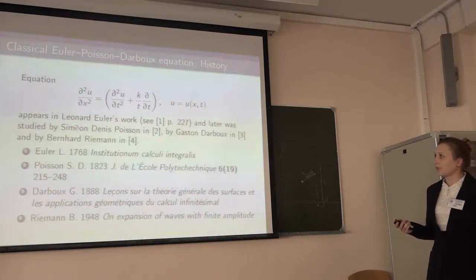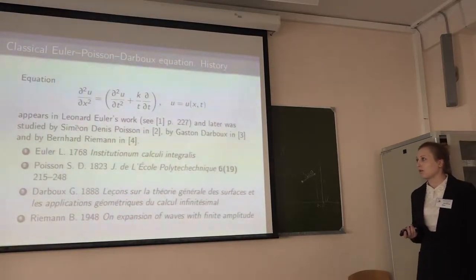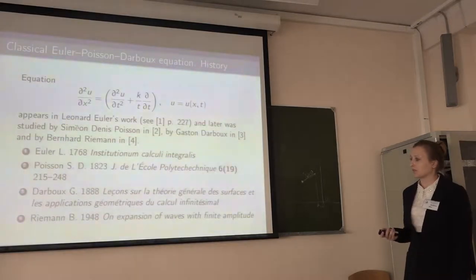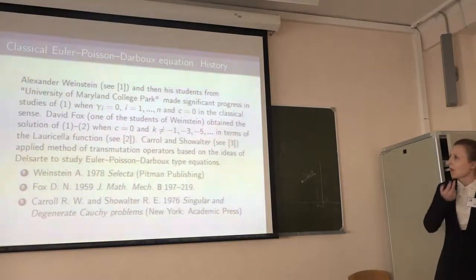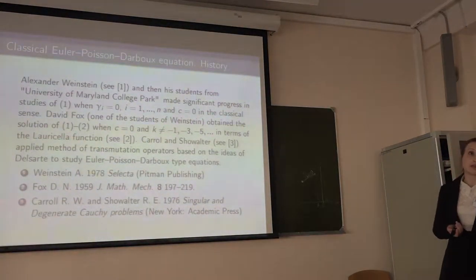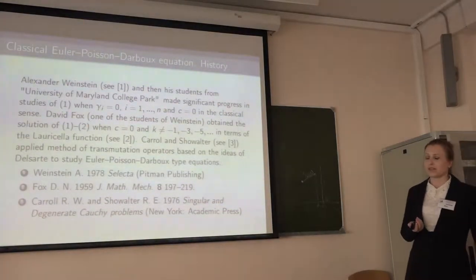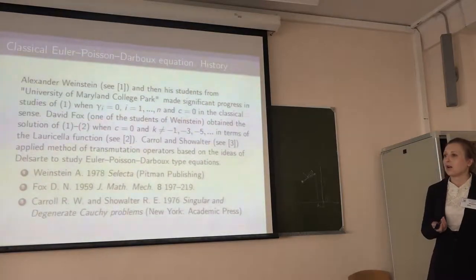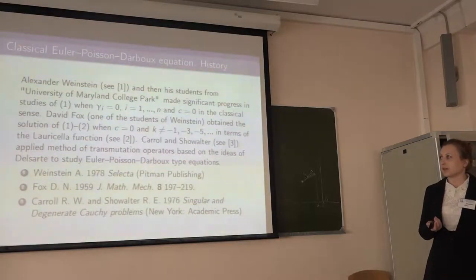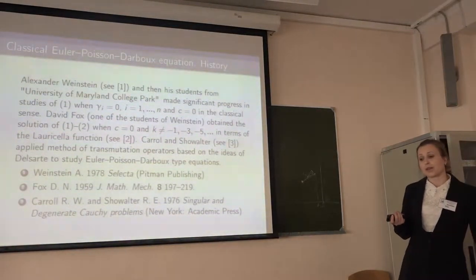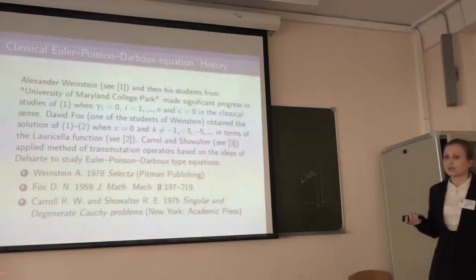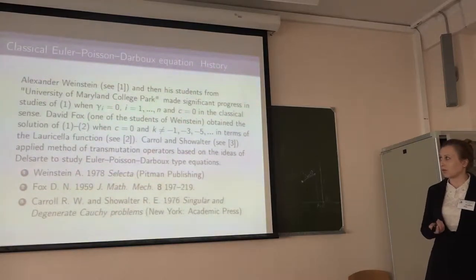Let's start from a short history. This equation was studied in Euler's work, later in Poisson, Darboux, and Riemann's works presented here. Next, the so-called Maryland Mathematical School, of which Alexander Bernstein was the idea leader, produced very good results and methods to obtain the solution of colonization — for example, the equation when gamma_i equals 0 for all i from 1 to n, and c equals 0.